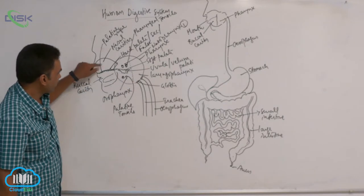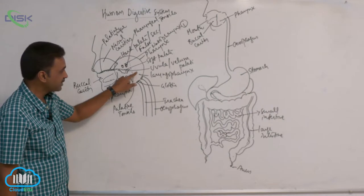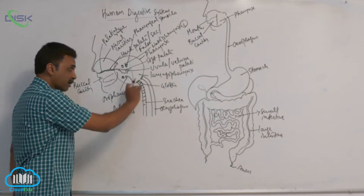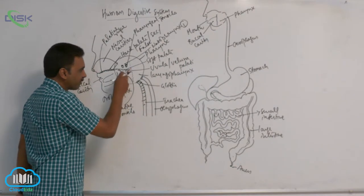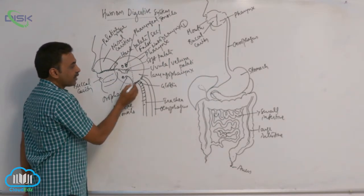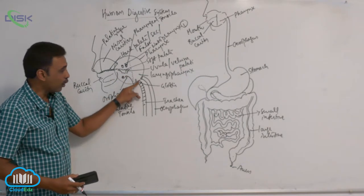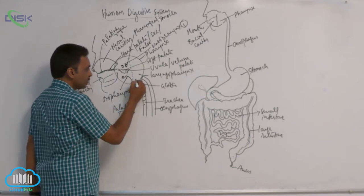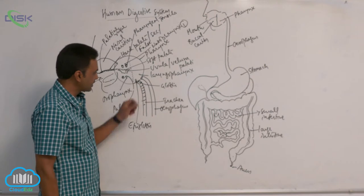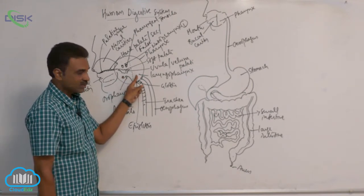Food coming from the buccal cavity enters the oropharynx, then the laryngopharynx. In the laryngopharynx there are two openings: the glottis, which is part of the respiratory system, and the esophagus opening. To prevent food from entering the glottis, there is a flap called the epiglottis, which covers the glottis whenever we take in food. So food travels from the buccal cavity through the oropharynx and laryngopharynx and enters the esophagus.